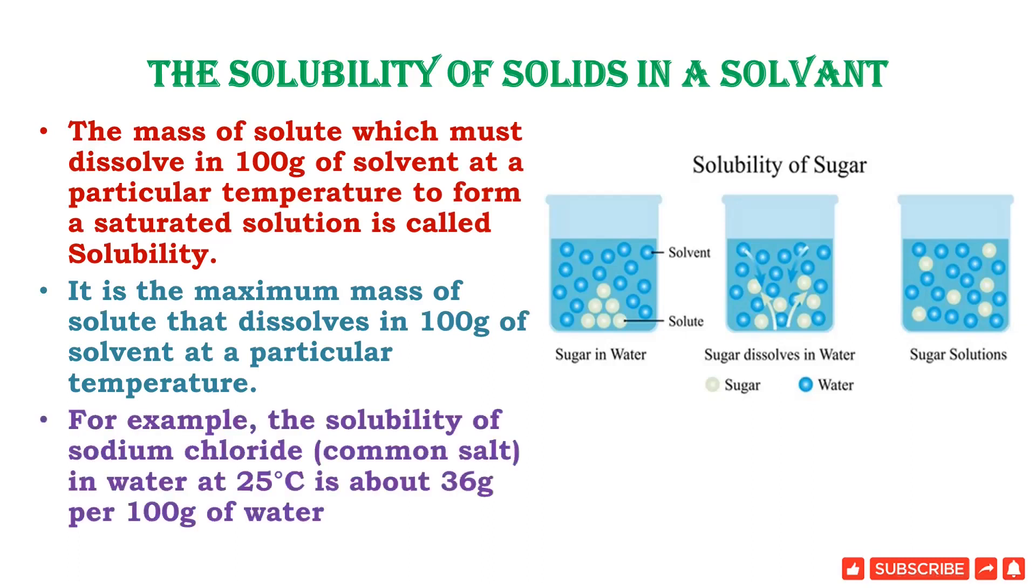For example, the solubility of sodium chloride, which is common salt, in water at 25 degrees Celsius is about 36 grams per 100 grams of water. If you take 100 grams of water and pour 36 grams of salt and keep stirring at 25 degrees Celsius without heating, it gets dissolved. This is the maximum amount of sodium chloride which can dissolve in 100 grams of water. The solubility equals mass of solute over mass of solvent times 100. We shall use this formula to solve the next questions.